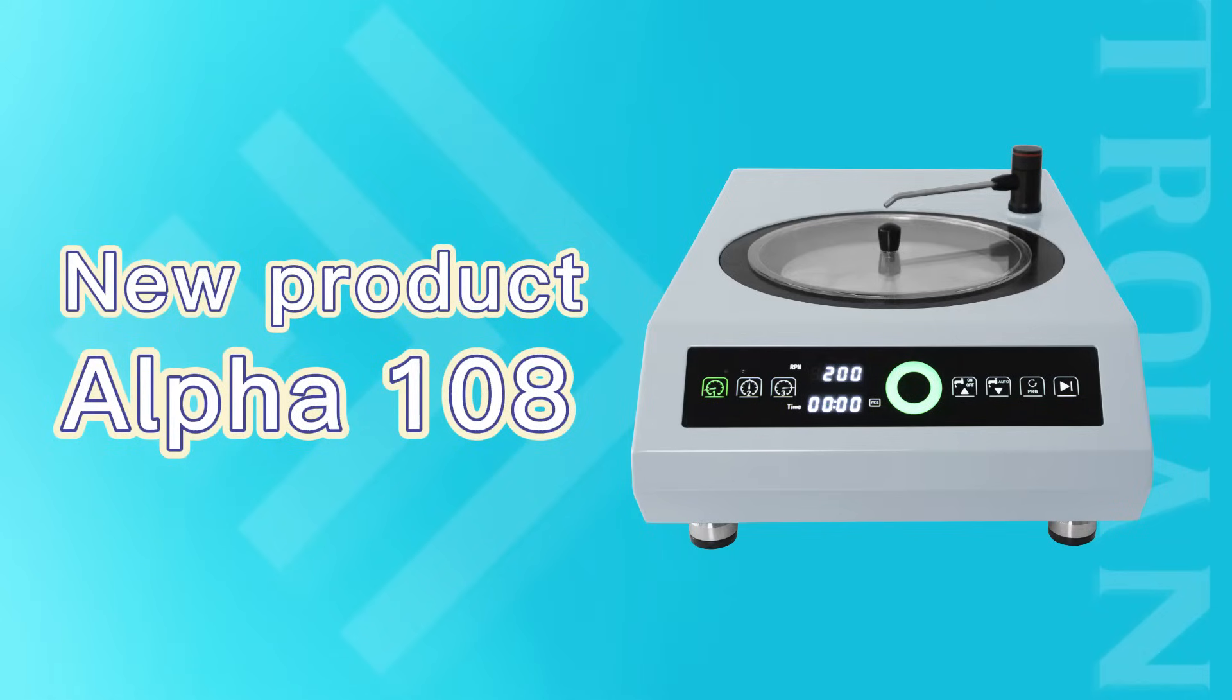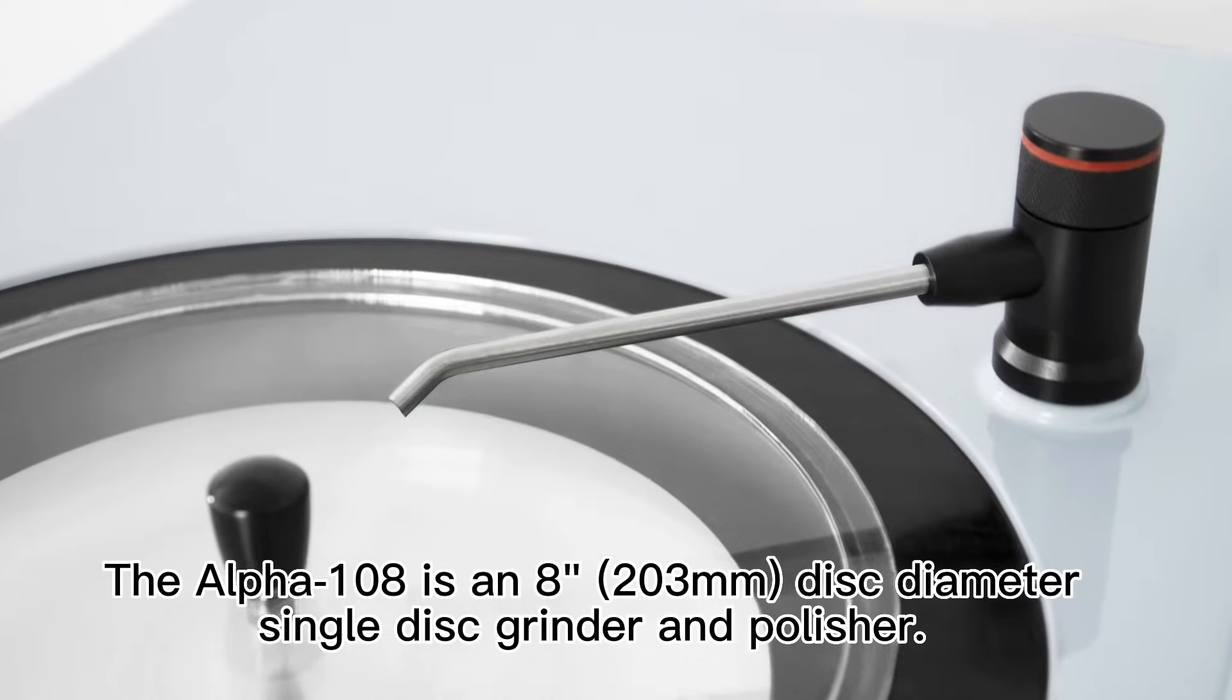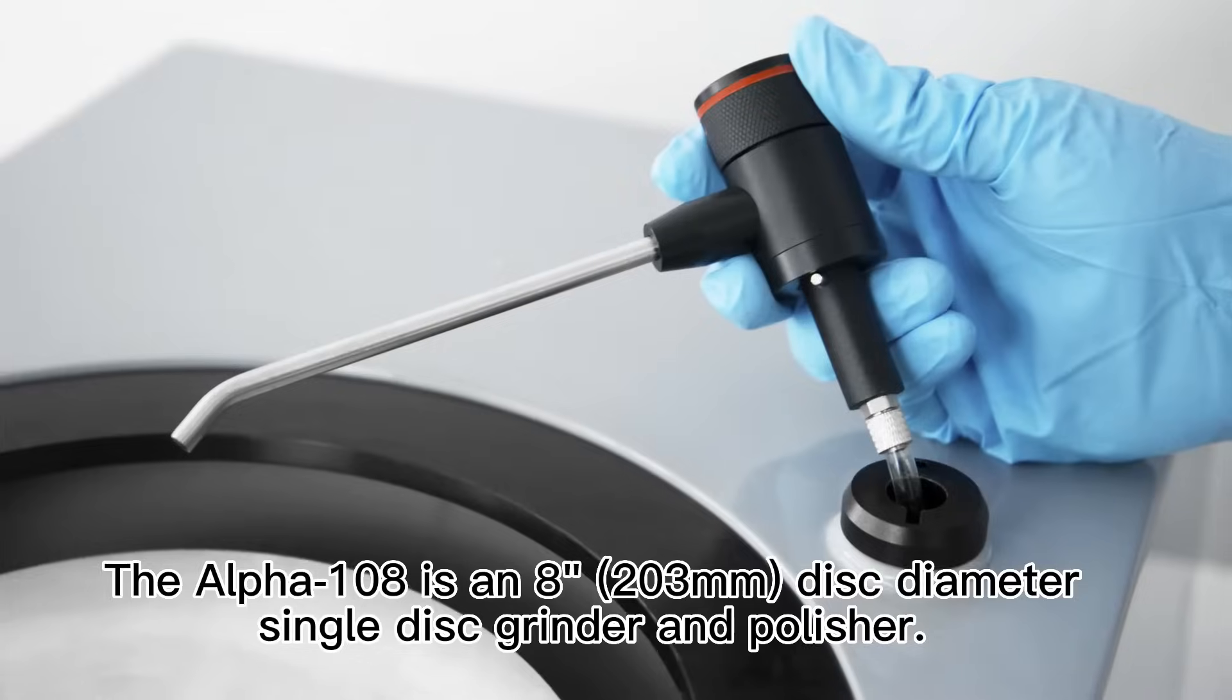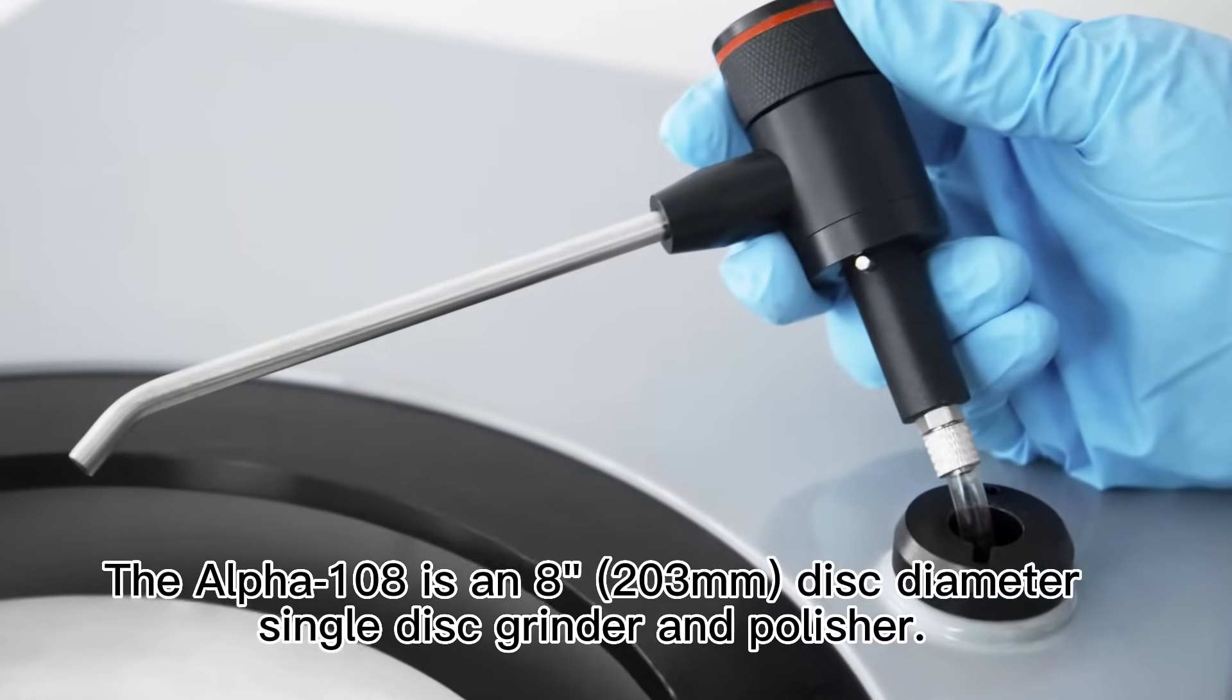You project the recommendation, Torgen single disc grinding and polishing machine. The Alpha 108 is an 8-inch disc diameter single disc grinder and polisher.